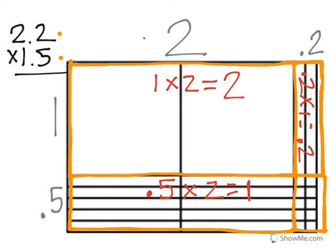And then finally I have 5 tenths times 2 tenths. So I would do 5 tenths times 2 tenths, which would equal 10 hundredths.